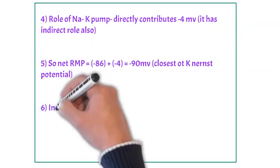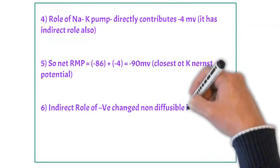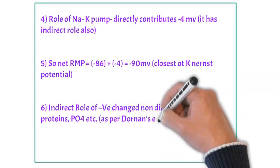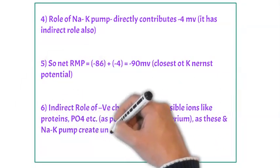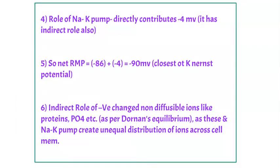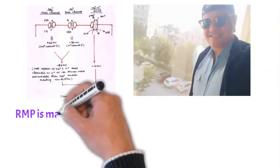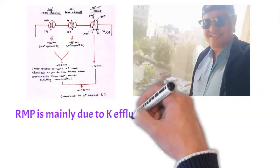It has indirect role as well, so net effect of RMP is minus 90 millivolt. Indirect role is of sodium potassium pump and non-diffusible ions like protein and phosphate, which create indirect distribution of RMP.